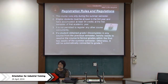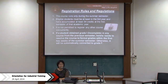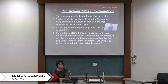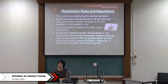Next is about the incomplete grade. If you obtain a grade of incomplete, or 'I', in any course from the previous semester, you have to resolve that to a formal grade within the first two weeks of the summer semester. Otherwise, it will be automatically converted to grade F.